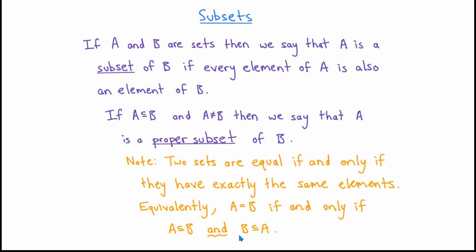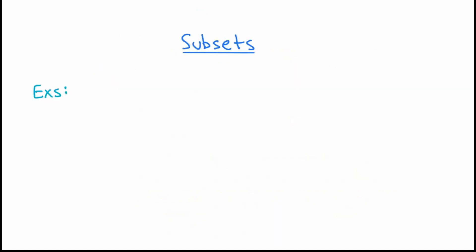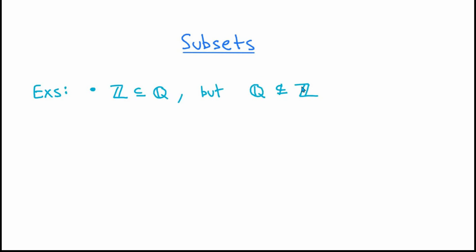Let's conclude by looking at some examples. The set of integers is a subset of the set of rational numbers, but the set of rational numbers is not a subset of the set of integers. The first is true because any integer n can be written as n divided by 1, which qualifies it as a rational number. For the other direction: is every rational number an integer? Of course not — the number one-half is rational but not an integer. If even one element of a set is not an element of another, then that set is not a subset of the other. So the rationals are not a subset of the integers.